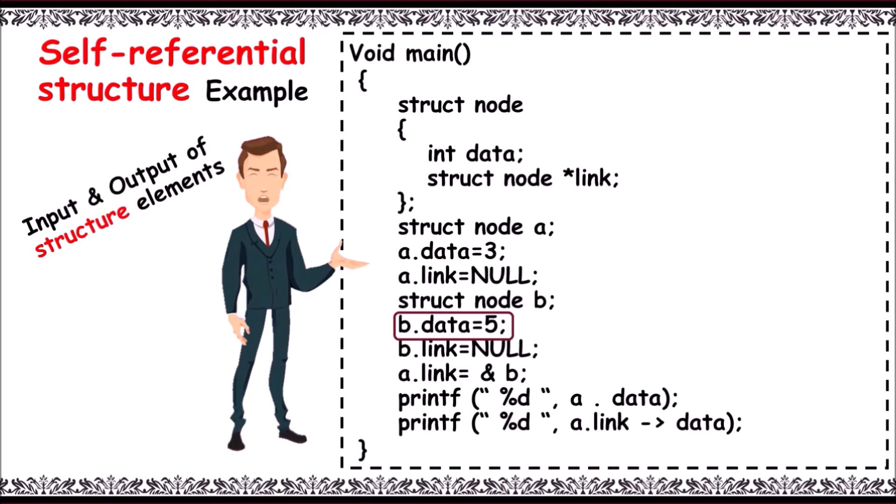Now storing address of b to a.link. On printing a.data it prints 3, whereas on printing a.link->data it prints 5. You can observe the output: 3 space 5.